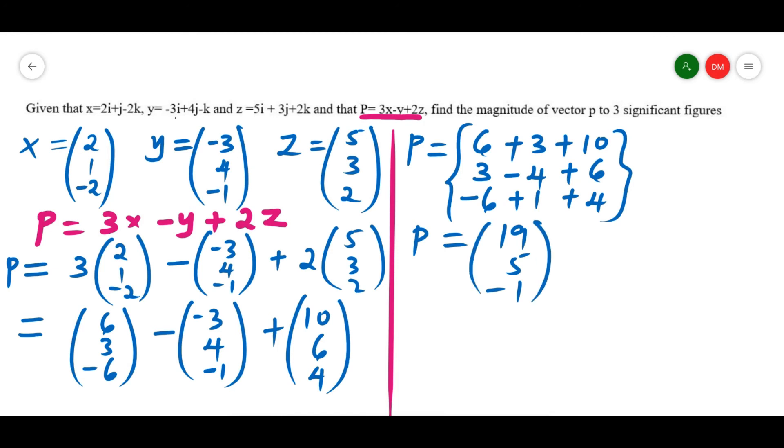Now after getting the value of vector p, we are required to get the magnitude. So the magnitude is written as p, or the modulus, will be given by we take 19 squared plus 5 squared plus negative 1 squared, then we get the square root. That is how we get the magnitude of the modulus.